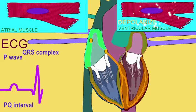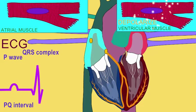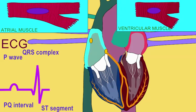The ventricles depolarize, and then as the cardiac muscle fibers undergo a plateau, the ECG returns to baseline during the ST segment.